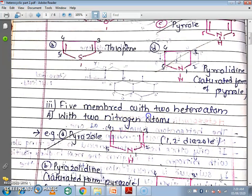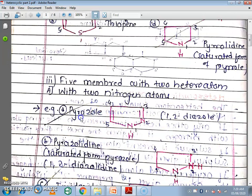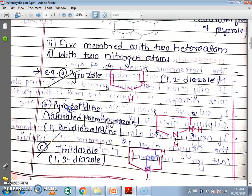Next we will see 5-membered rings with 2 heteroatoms. The first category contains 2 nitrogen atoms. The first compound is pyrazole, which is a 5-membered ring containing 2 nitrogens. This is the saturated form of pyrazole — 1,2-diazolidine. This also contains 2 nitrogen atoms in a 5-membered ring, but it is the saturated form of pyrazole, with 2 double bonds replaced by single bonds through addition of hydrogen.